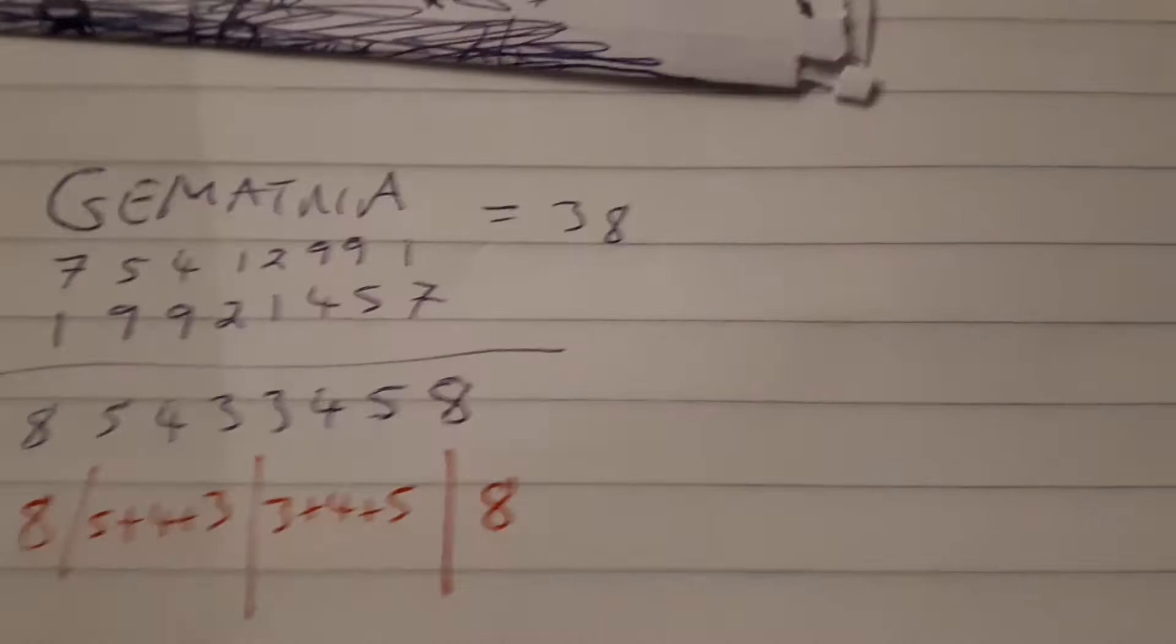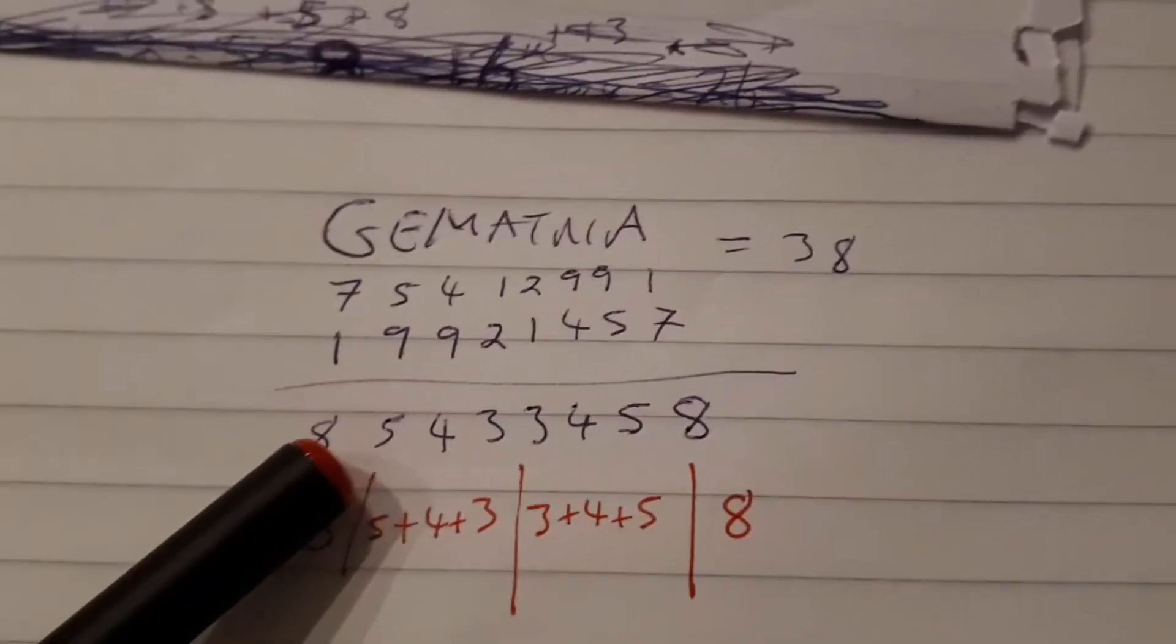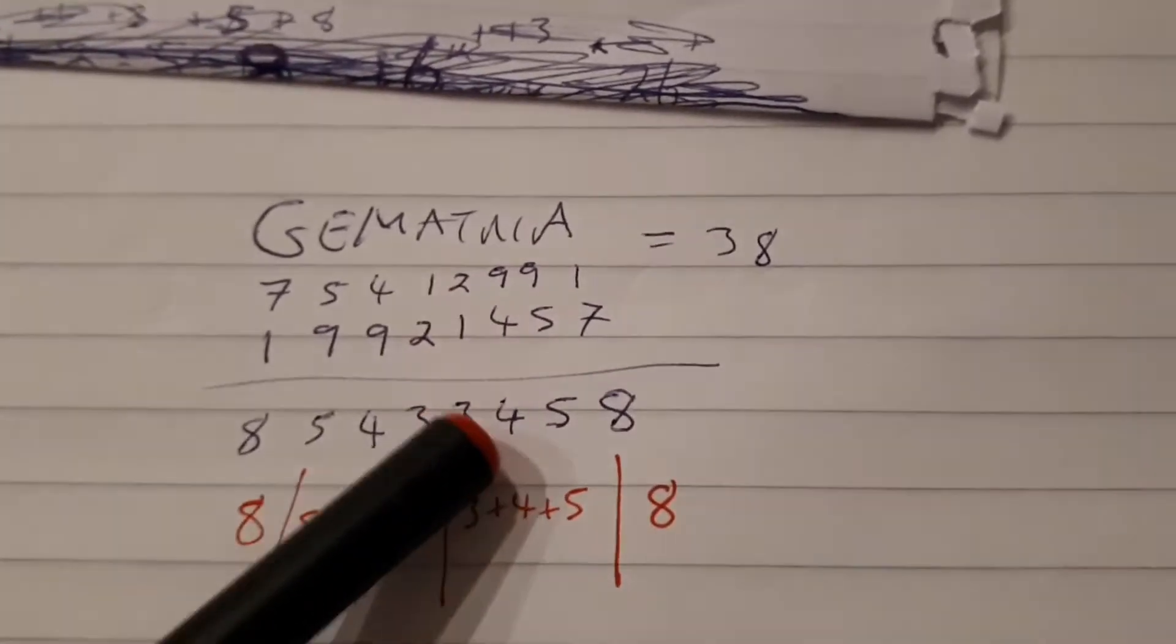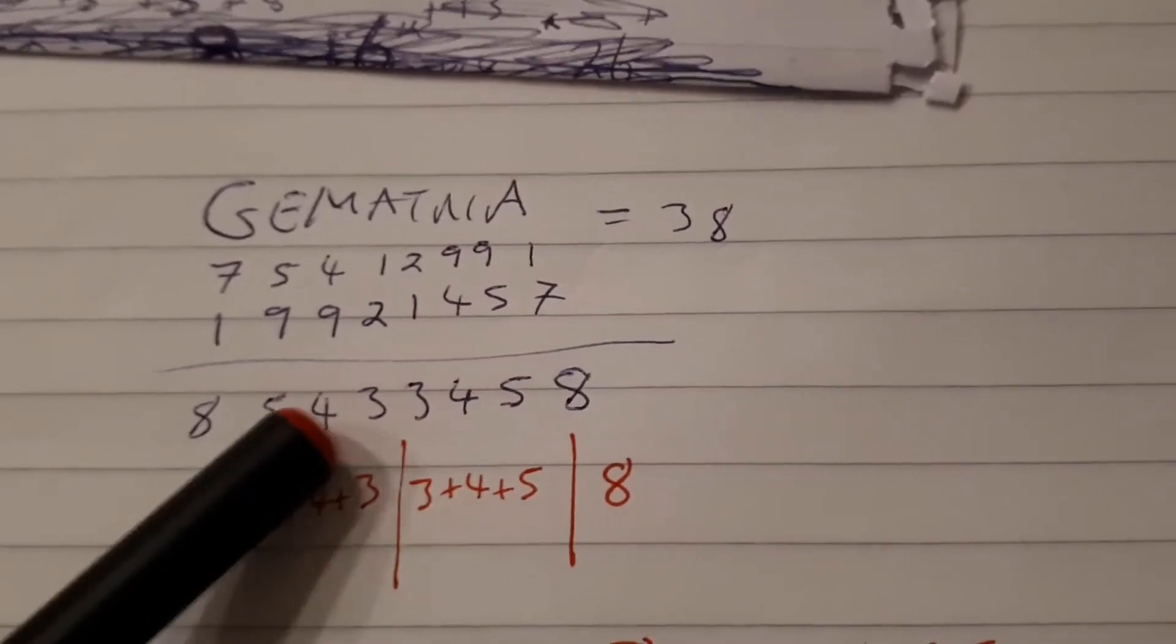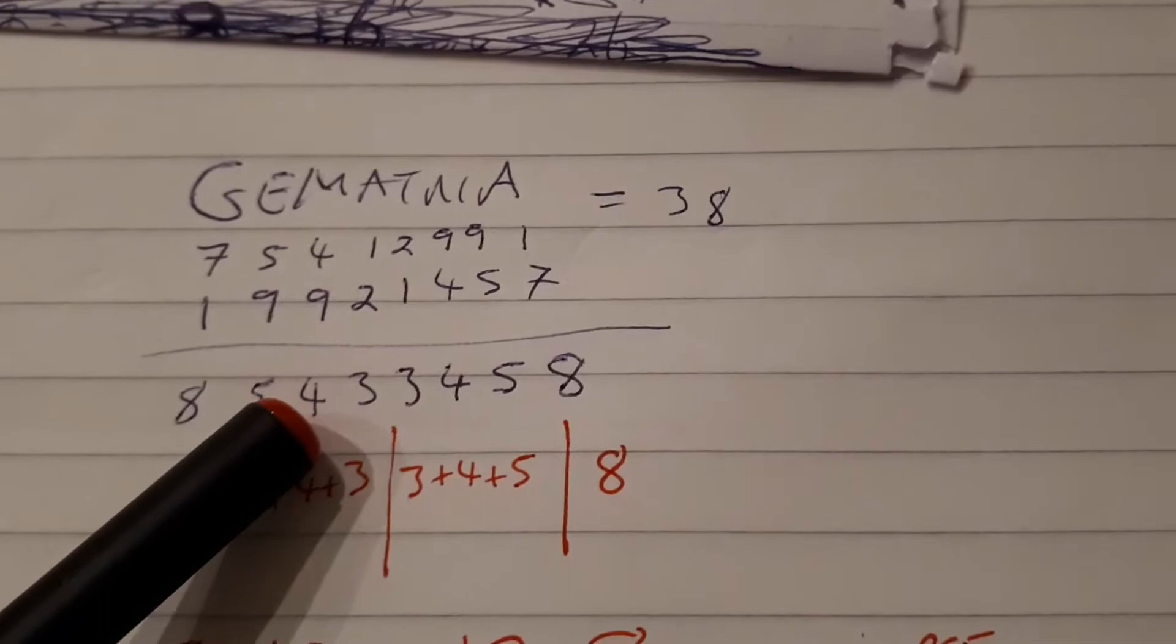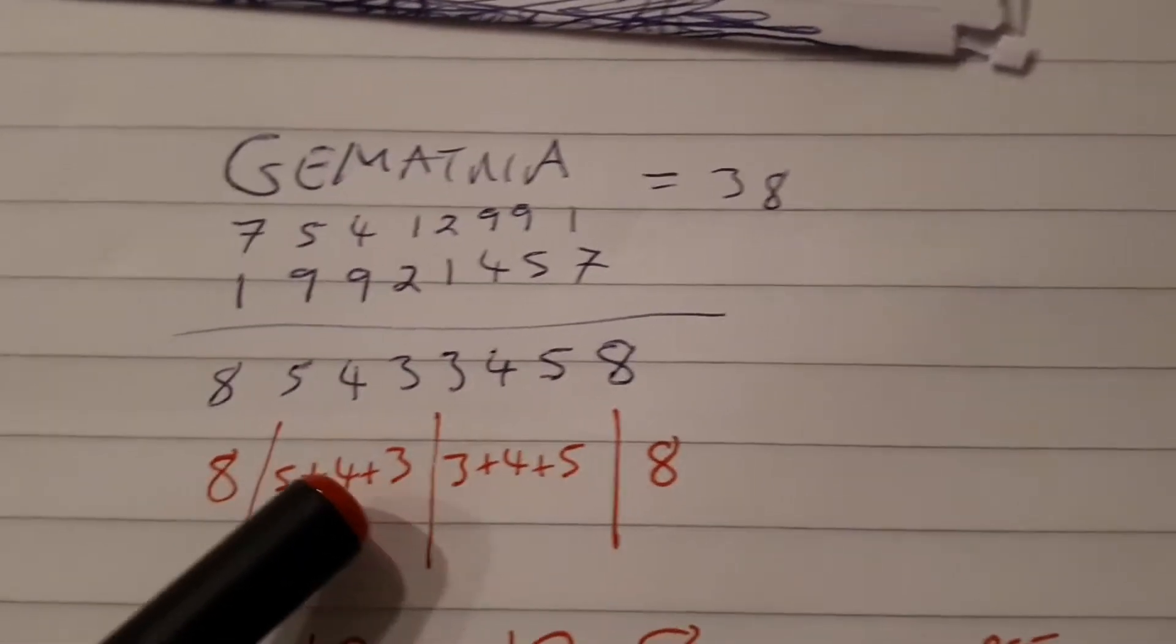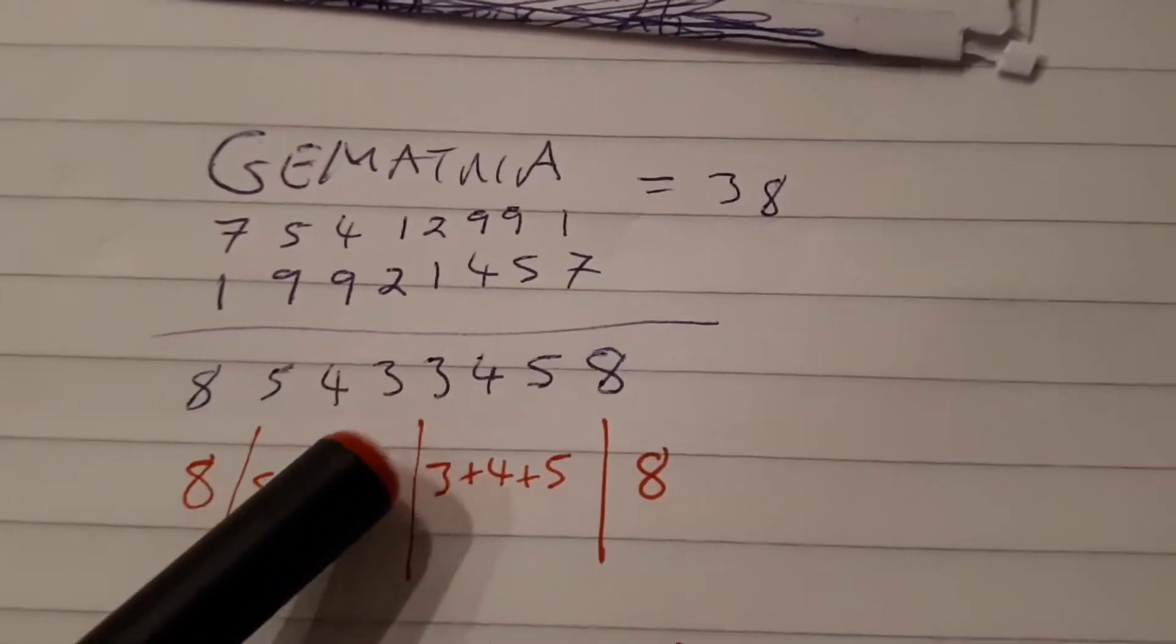Gematria comes up with this one. So again, you've got your eights either side, mirrored answer once more, straight down the middle: 33, 54, 45. Look at that one—nine sixes, nine fives, nine six. Yeah, nine sixes there.